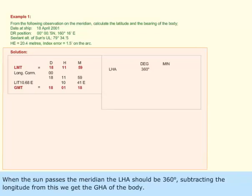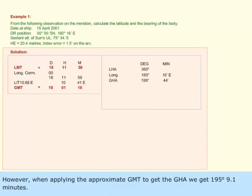When sun passes the meridian, the LHA should be 360 degrees. Subtracting the longitude from this, we get the GHA of the body. However, when applying the approximate GMT to get the GHA, we get 195 degrees 9.1 minutes.